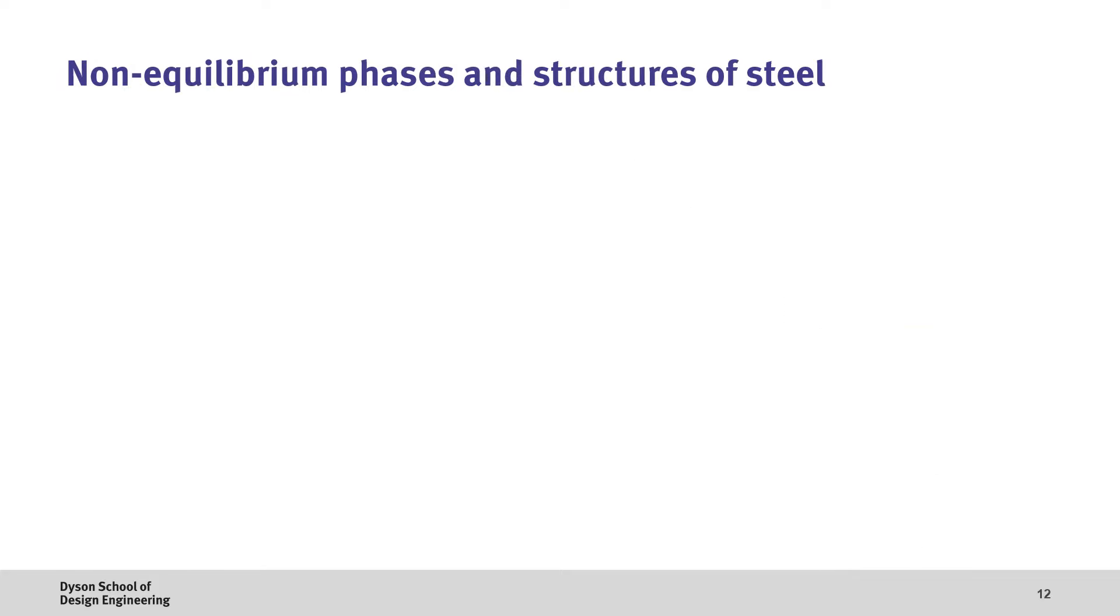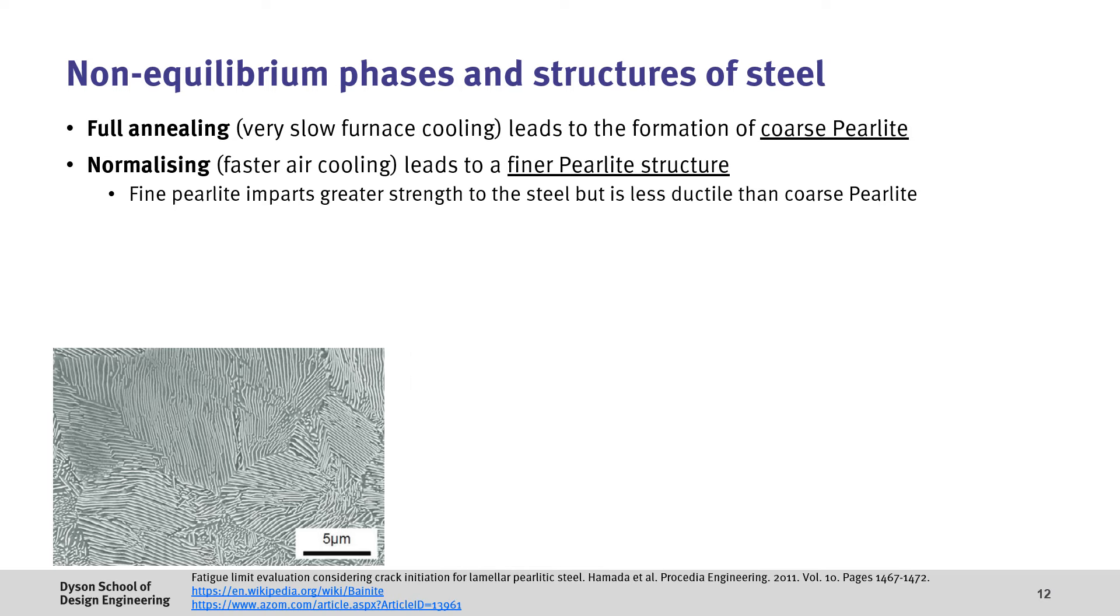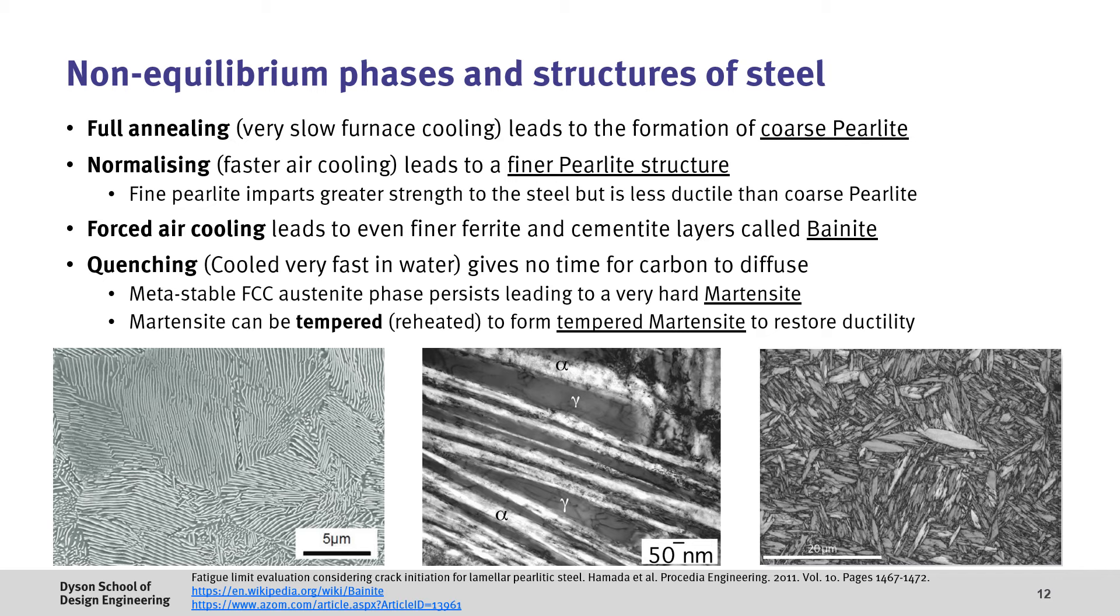Now, if we start to look at how different heat treatments affect the structure of steel, we see that we can form various non-equilibrium phases. When we do full annealing of the steel, which is a very slow furnace cooling, this leads to the formation of coarse pearlite. If we then cool this slightly faster through a normalizing process, which is faster air cooling, we still form pearlite, but with a finer structure. Then, if we cool even faster, say with forced air cooling, we form an even finer structure of ferrite and cementite, which we call bainite. Finally, if we quench the material in water, which cools it down very rapidly, giving no time for the carbon to diffuse, we form a metastable face-centred cubic phase, which we call martensite, which is extremely hard and brittle.